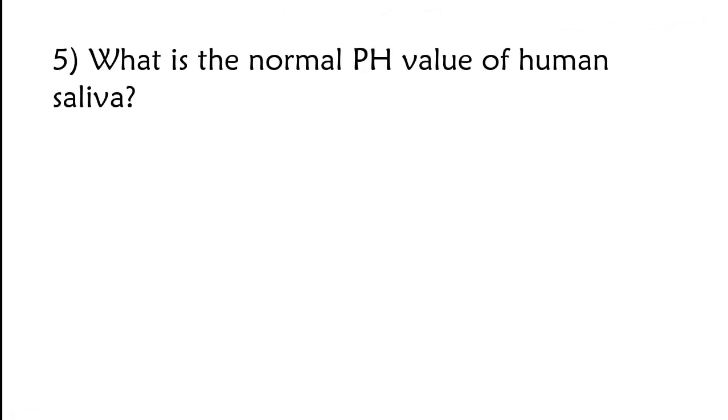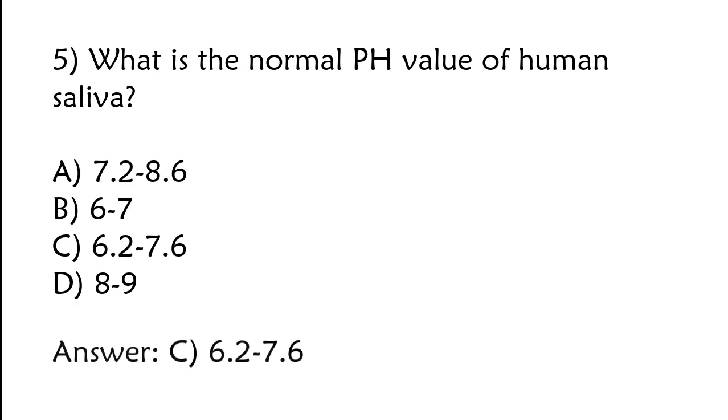What is the normal pH value of human saliva? 7.2 to 8.6, 6 to 7, 6.2 to 7.6, or 8 to 9. The correct answer is option C, 6.2 to 7.6.